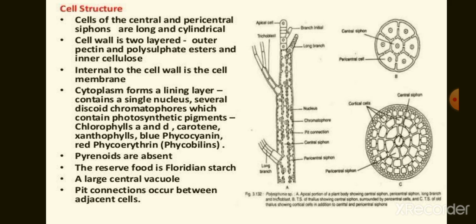To summarize cell structure: the thallus is composed of a large central siphon surrounded by several pericentral siphons. Each cell is uninucleate with many discoid chromatophores arranged peripherally in the cytoplasm. The cell wall is thick, and each cell contains a large central vacuole, cell sap, pyrenoids, and Floridean starch in the cytoplasm as reserve food material.